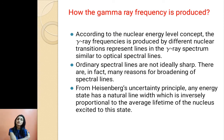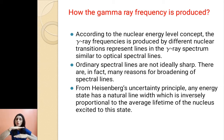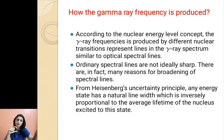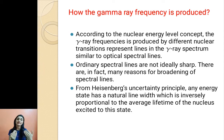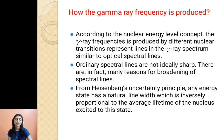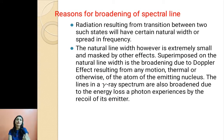According to the nuclear energy level concept, the gamma ray frequency produced by different nuclear transitions represents a line in the gamma ray spectrum, similar to optical spectrum lines. Whenever a transition takes place between two nuclear energy levels, a photon is emitted with energy equal to the difference between the two energy levels — that is nothing but the gamma ray photon. Ordinary spectral lines are not ideally sharp; from Heisenberg's uncertainty principle, any energy state has a natural line width inversely proportional to the average lifetime of the nucleus in that excited state.